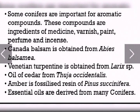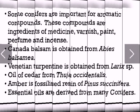Canada balsam is obtained from Abies balsamea. Venetian turpentine is obtained from Larix. Oil of Sida is obtained from Thuja. Amber is a fossilized resin of Pinus. Many essential oils are also derived from coniferous plants.